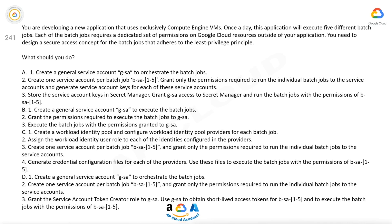Option A: 1. Create a general service account GSA to orchestrate the batch jobs. 2. Create one service account per batch job BSA-1 through BSA-5. Grant only the permissions required to run the individual batch jobs to the service accounts and generate service account keys for each of these service accounts. 3. Store the service account keys in Secret Manager. Grant GSA access to Secret Manager and run the batch jobs with the permissions of BSA-1 through BSA-5.